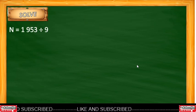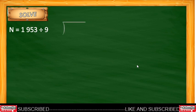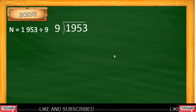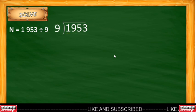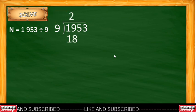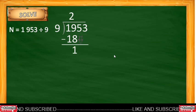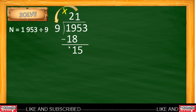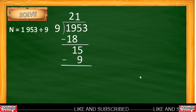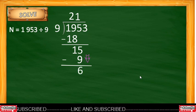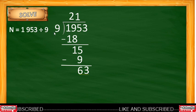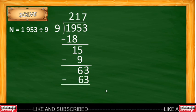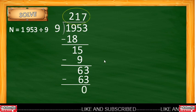Now let's solve. N = 1,953 ÷ 9. The dividend 1,953 is inside the long division bar and the divisor 9 is outside. 19 ÷ 9 = 2; 2 × 9 = 18; 19 − 18 = 1. Bring down 5: 15 ÷ 9 = 1; 1 × 9 = 9; 15 − 9 = 6. Bring down 3: 63 ÷ 9 = 7; 7 × 9 = 63; 63 − 63 = 0. The answer is 217.